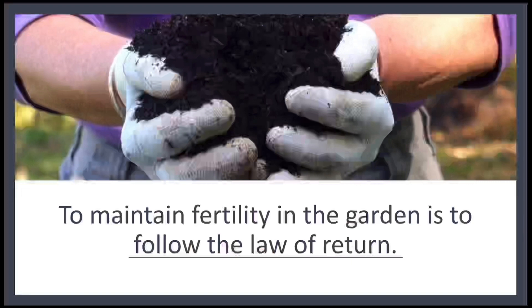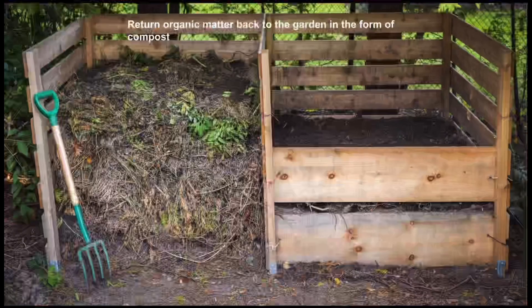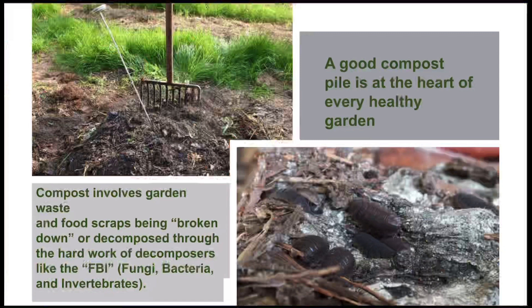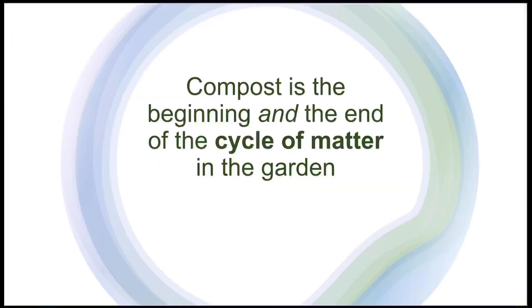To maintain fertility in the garden is to follow the law of return — very important. If you take it out of the garden, put it back into the garden. Return organic matter back to the garden in the form of compost. A good compost pile is at the heart of every healthy garden. Compost involves garden waste and food scraps being broken down through the hard work of decomposers — like the FBI: fungi, bacteria, and invertebrates. Once the ingredients in the compost pile are fully decomposed, the nutrients in their tissues are released and made available for plants to use again. Compost is the beginning and the end of a cycle of matter in the garden.